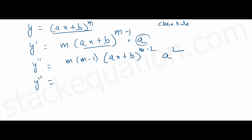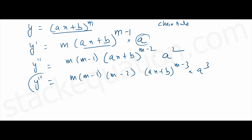And then we find the third derivative: m(m-1)(m-2)·(ax + p)^(m-3)·a³. So here if you observe, for the third derivative it goes on to (m-2), and (ax + b) to the power (m-3), into a to the power 3.